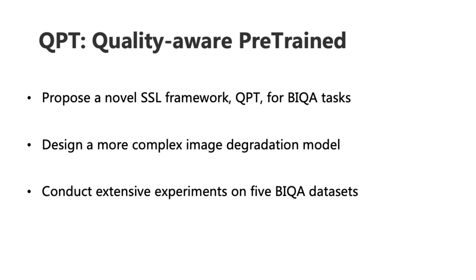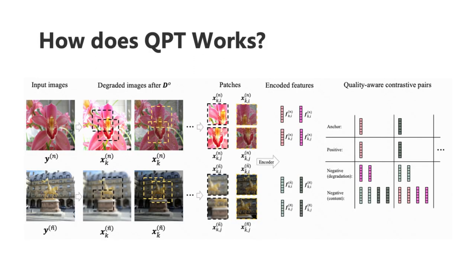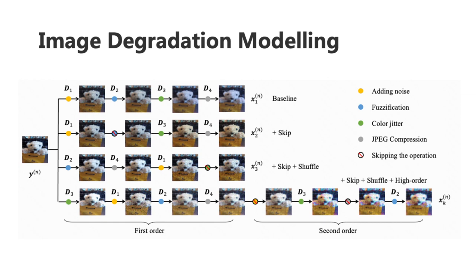Besides, we also design a more complex image degradation model, resulting in a much larger degradation space for representation learning. We follow the pre-training and fine-tuning paradigm just like MoCo; however, we suppose the quality of patches from a distorted image should be similar, but vary from different images and the same image with different degradations. Inspired by recent progress in image restoration, we introduce image degradation modeling to expand the degradation space as large as possible. In this way, pre-trained models are expected to extract quality-aware features and boost downstream BIQA performance.